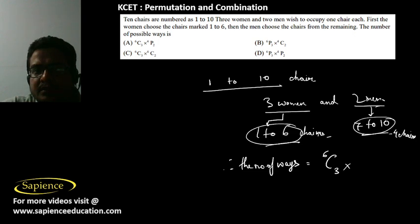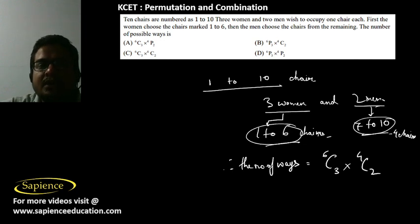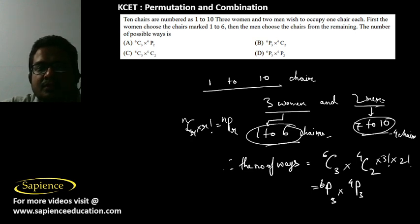The number of possible ways is 6C3 × 4C2. The three women can also arrange among themselves in 3! ways, and the two men in 2! ways. Since nCr × r! = nPr, this can be written as 6P3 × 4P2, since 6C3 × 3! = 6P3 and 4C2 × 2! = 4P2. So option D is the correct answer.